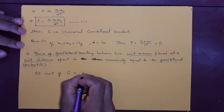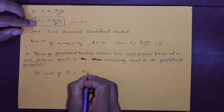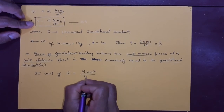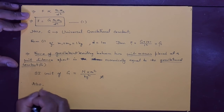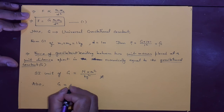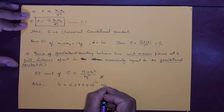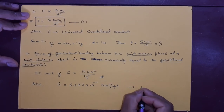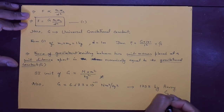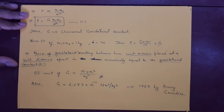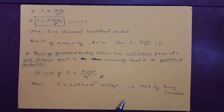The SI unit of G, derived from the formula, is Newton·meter² per kg², which can be written as N·m²/kg². The value of G is 6.673 × 10⁻¹¹ N·m²/kg². This value was found in 1798 by Henry Cavendish. The important formula to use in numericals is F = Gm₁m₂ / d².